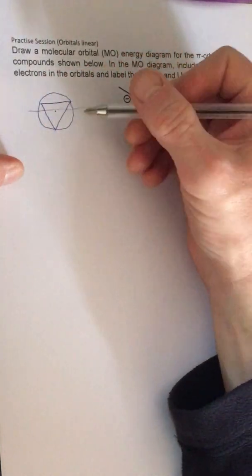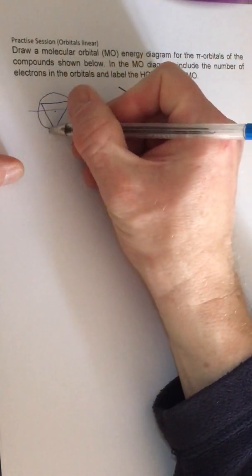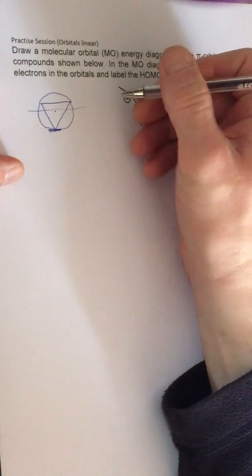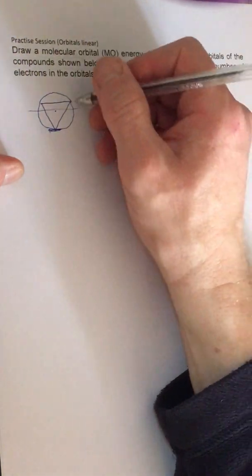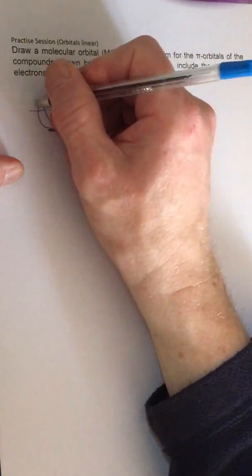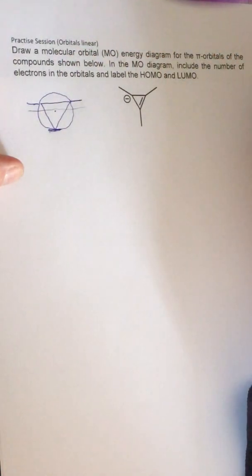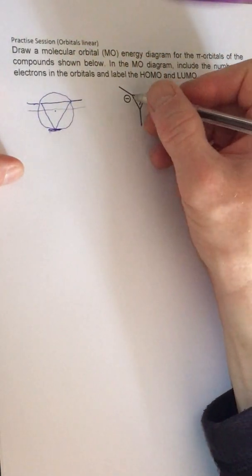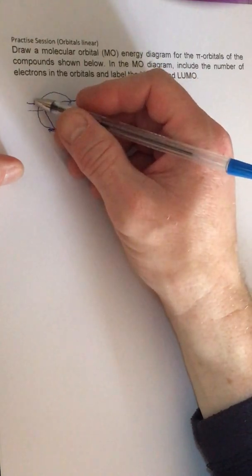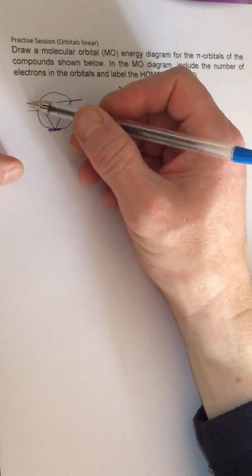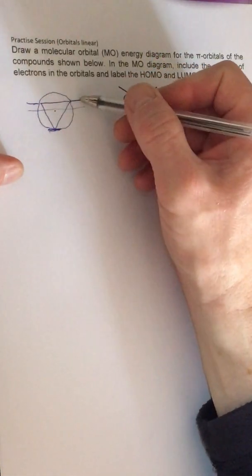Basically, the energy level at the vertex at the bottom is going to be bonding because it's below the line, and above the line is going to be anti-bonding. Because there are four electrons, it's going to be a high energy system because we're going to put electrons into these orbitals.